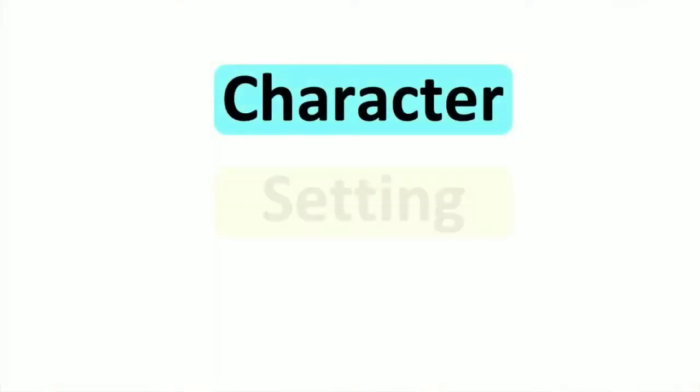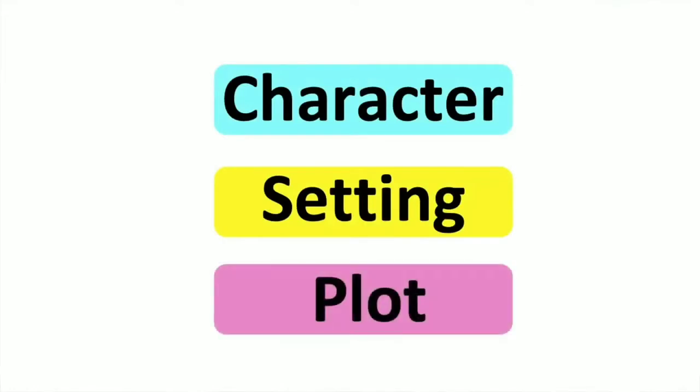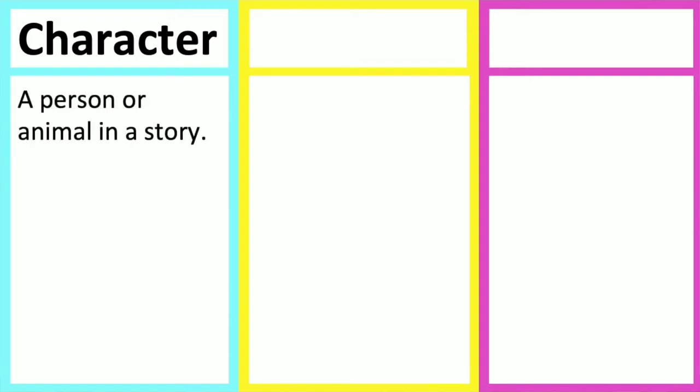A story is made up of different elements including characters, setting, and plot. These parts allow the reader to understand and to follow the storyline.